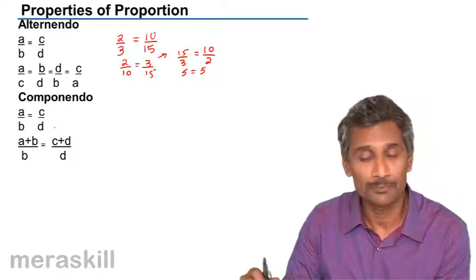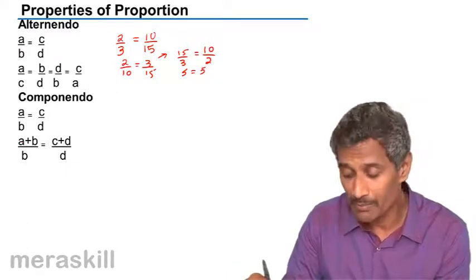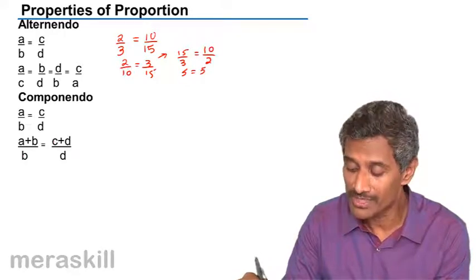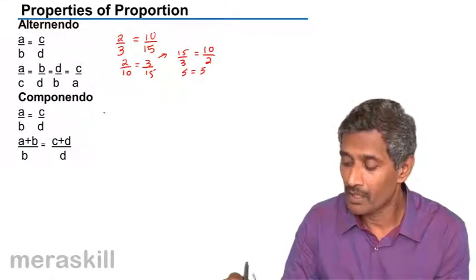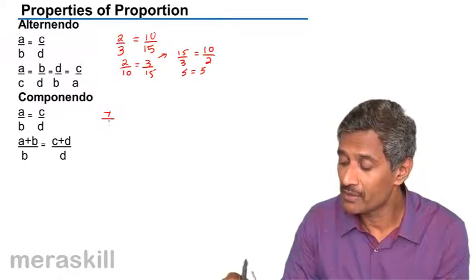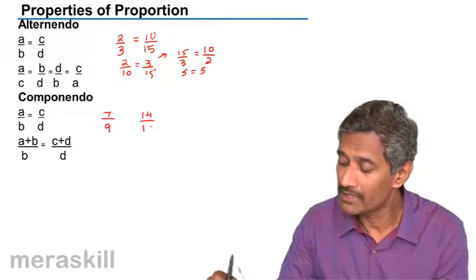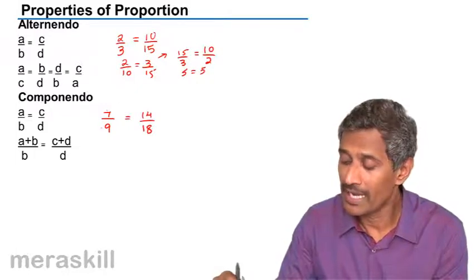Then you have componendo rule. A/B equals C/D. Then, A plus B upon B is also equal to C plus D upon D. Say, we can have 7 upon 9 equals 14 by 18. Add 7 plus 9.